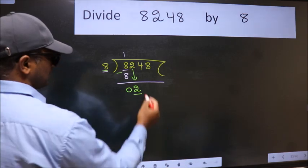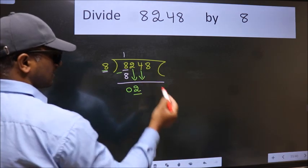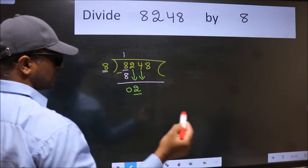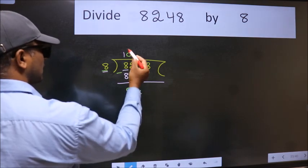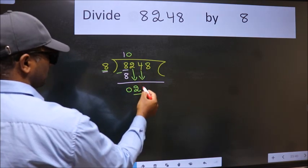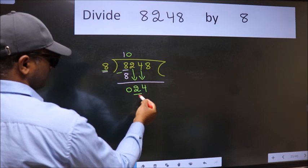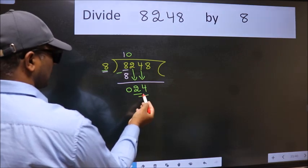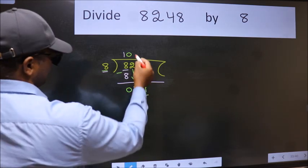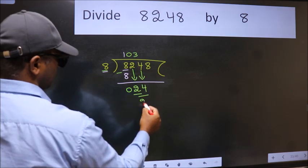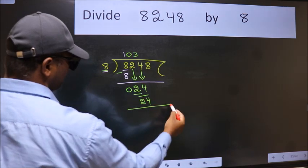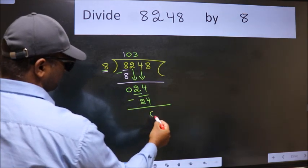The rule to bring down the second number is put zero here, then only we can bring this number down. So 24. When do we get 24 in the 8 table? 8 times 3 is 24. Now we subtract. We get zero.